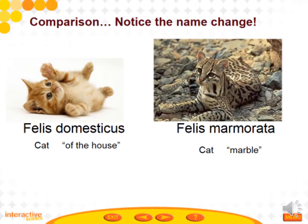Let's look at two names and compare them. Felis domesticus means 'cat of the house' — domesticus means 'of the house.' Whereas Felis marmorata — felis is still cat, but this one means he's got a marbled coat. So their names are going to tell you something about them.